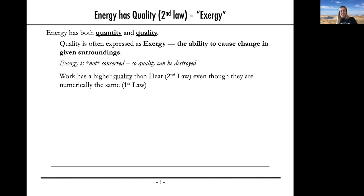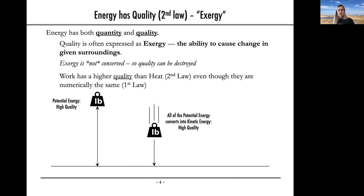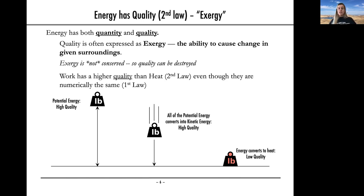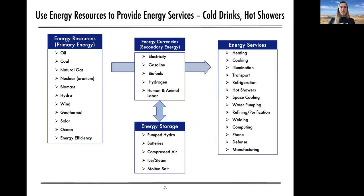Here's a simple example of quality. If I'm holding a weight above the ground, it has high potential energy — pretty high quality. As I start dropping it, the potential energy converts to kinetic energy — still pretty high quality; I could hit something, spin something, make electricity. Then that weight hits the ground: no more potential energy, no more kinetic energy. A lot of energy goes into low-quality heat dissipated into the air. That same quantity of energy is now really low quality — I can't do anything with it. That's energy quality.